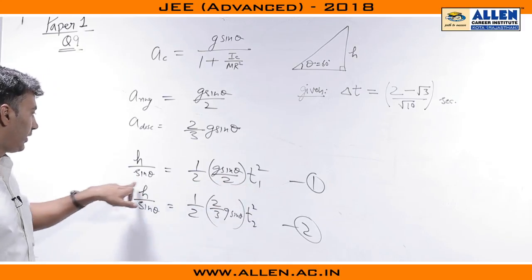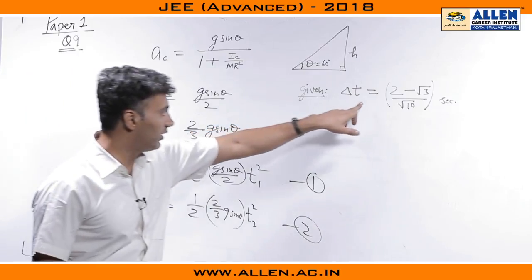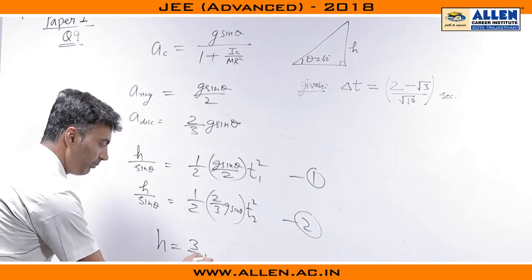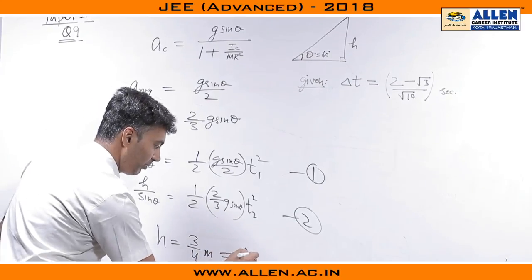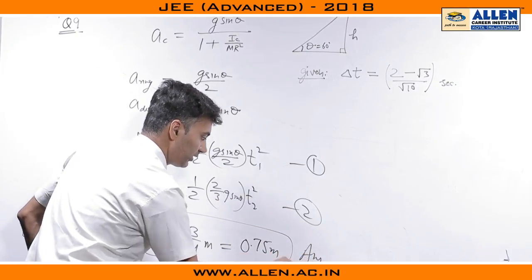Now, from here you could have t1 and t2 in terms of h, which you substitute. Upon solving, you get h equals 3 by 4 meters, which comes out to be 0.75 meters, which is also the answer for the question.